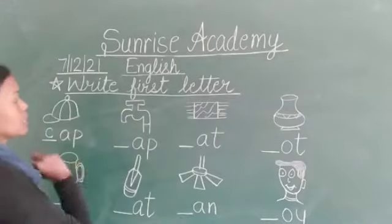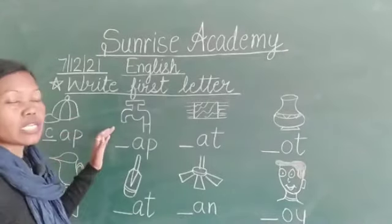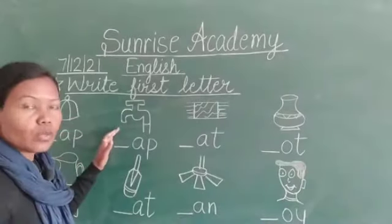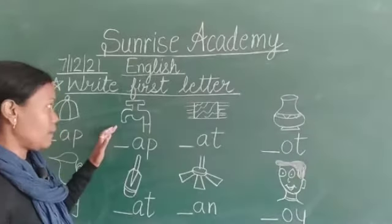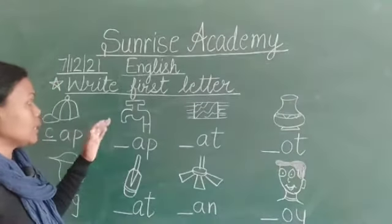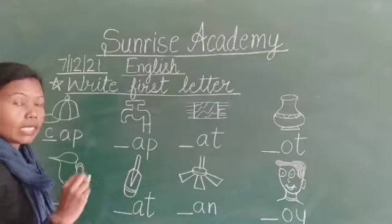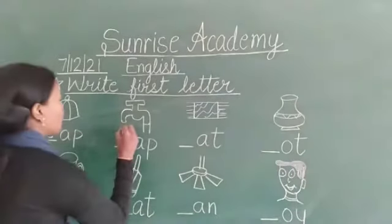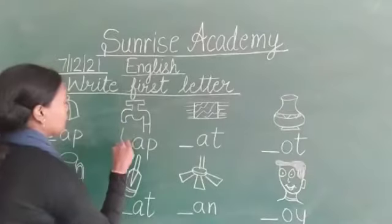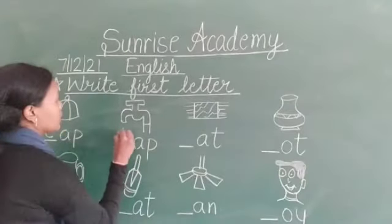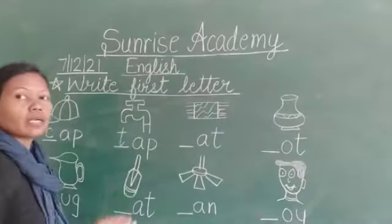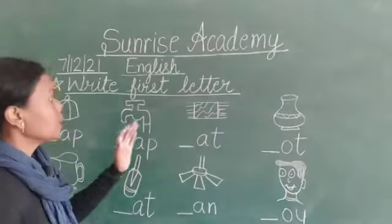Next, recognize the picture. Tap. So, T — here we will write T. T, A, P — tap.